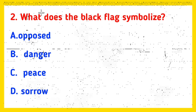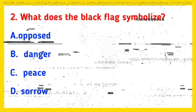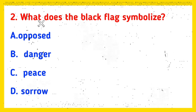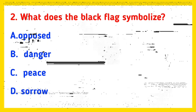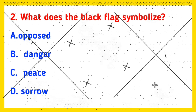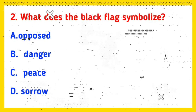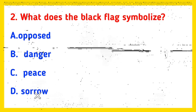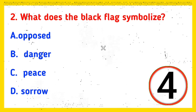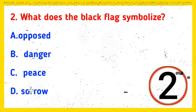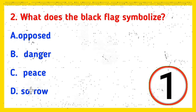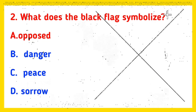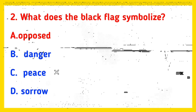Q2: What does the black flag symbolize? Option A: Opposed, Option B: Danger, Option C: Peace, Option D: Sorrow. And the correct answer is Option A, Opposed.